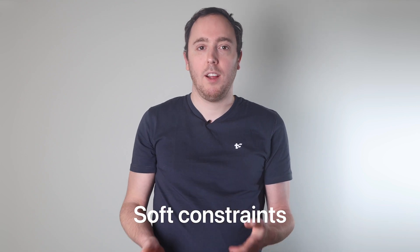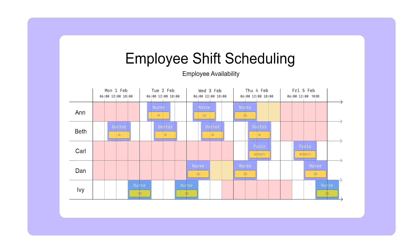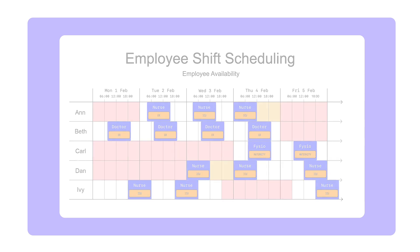When optimizing, TimeFold will fit in as many of these preferences as possible. In reality, taking into account basic availability alone is already a challenging puzzle for any human planner. Adding preferences to the mix only makes it more difficult to create a feasible schedule by hand. And there are many more constraints to take into account.